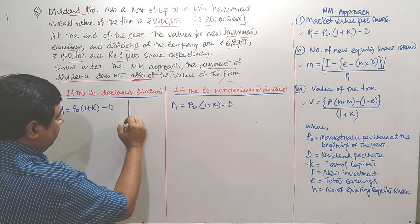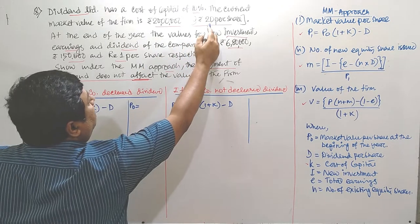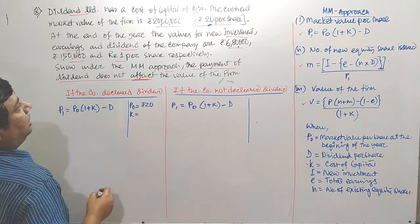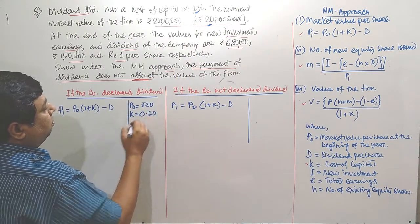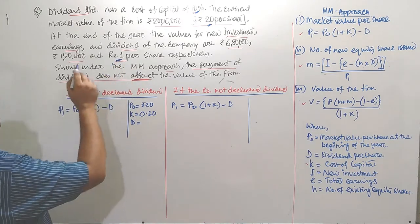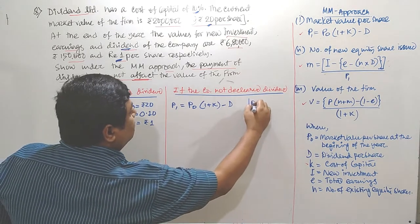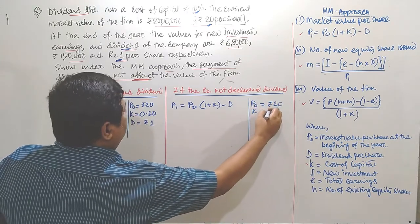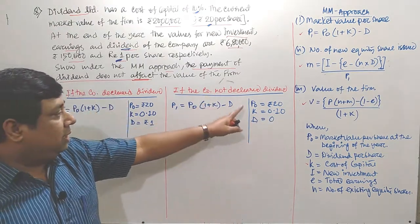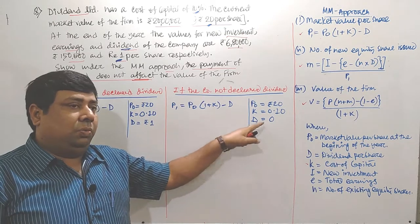If I plot the information: P0, the value per share, is Rs. 20. K, the cost of capital, is 10%, or 0.10. And D, the dividend per share — if the company declared a dividend, it is mentioned as Rs. 1. In the second case, P0 remains as Rs. 20 and K equals 0.10, but D is considered as 0, since the company did not declare any dividend.